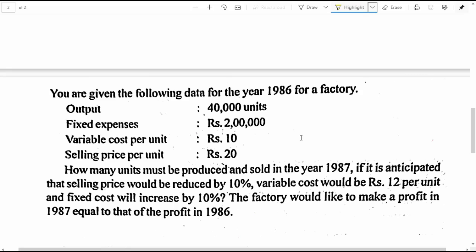You are given the following data for the year 1986 for a factory. Output: 40,000 units. Fixed expenses in total: 2 lakh rupees. Variable cost per unit: 10 rupees. Selling price per unit: 20 rupees.